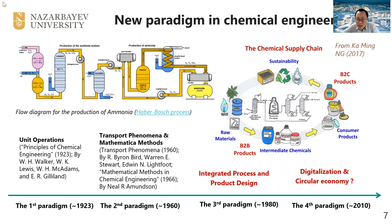There was also strong emphasis on product design — more customer-oriented: given a market demand for a certain product, how can you make it? You go backwards to find the optimal chemical engineering process. That has been the main research topic in chemical engineering for the past 30–40 years. From about 10 years ago, the focus shifted to system digitalization and circular economy — making processes and product design more sustainable.